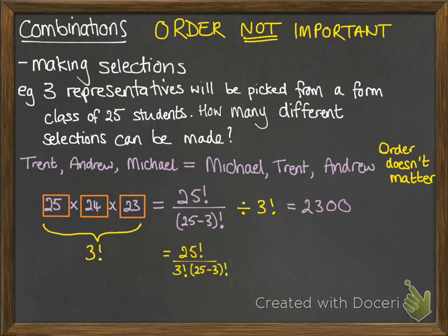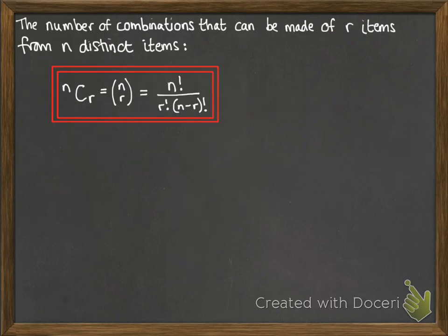This can also be written in one step, putting that 3! on the bottom. In general terms, the number of combinations that can be made of r items from n distinct items is this formula: ⁿCᵣ = n! / (r!(n-r)!). It's very similar to the permutations formula, but we're dividing through by that r! on the bottom.